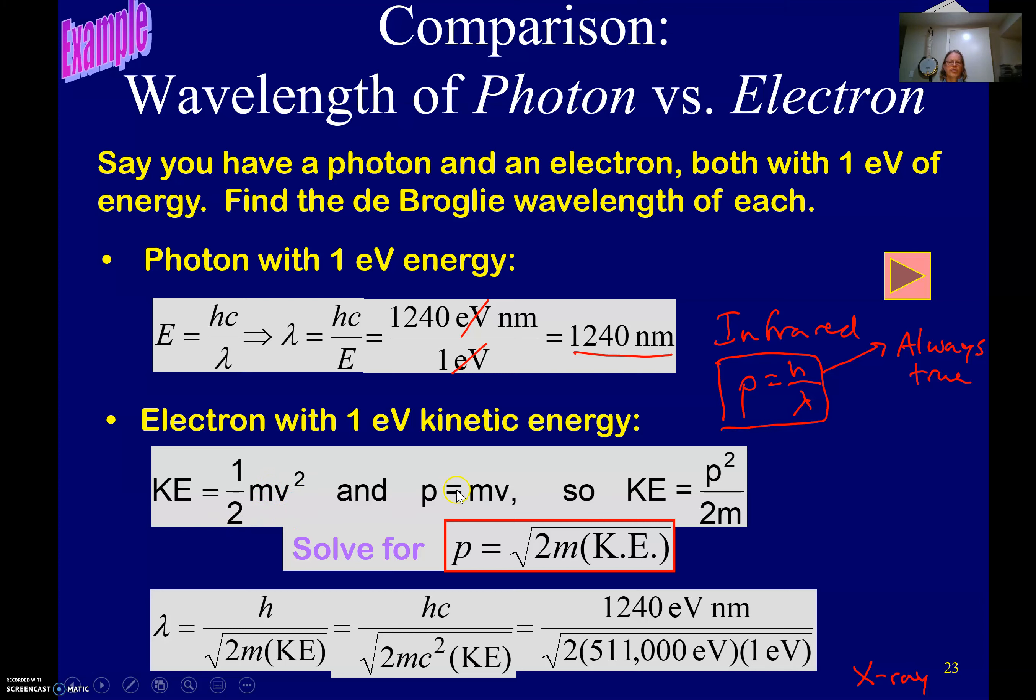Now you know the velocity, you already know the mass. Find the momentum of it, and once you know the momentum of it, go back and solve for the wavelength, and there you go. That's going to be the wavelength of the thing.